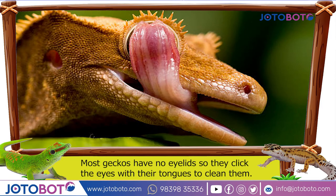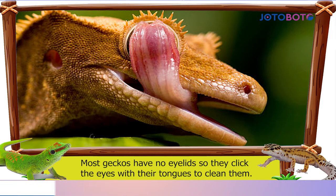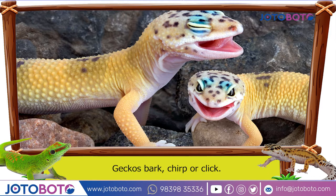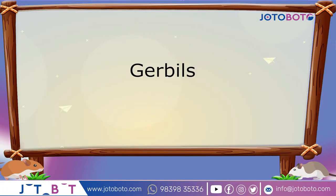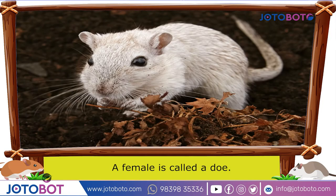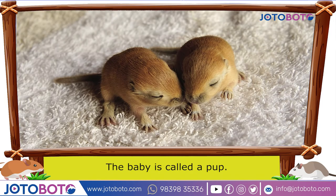Most geckos have no eyelids, so they lick their eyes with their tongues to clean them. Geckos bark, chirp, or click. Gerbils — a male gerbil is called a buck, a female is called a doe, and the baby is called a pup.